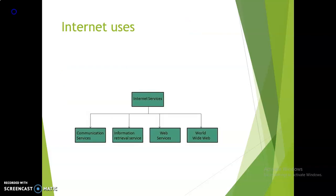Using the internet, people use many services. The main services are communication services, which allow people to communicate using the internet; information retrieval services, for getting any information through the internet; web services, for accessing information via a browser; and the World Wide Web.